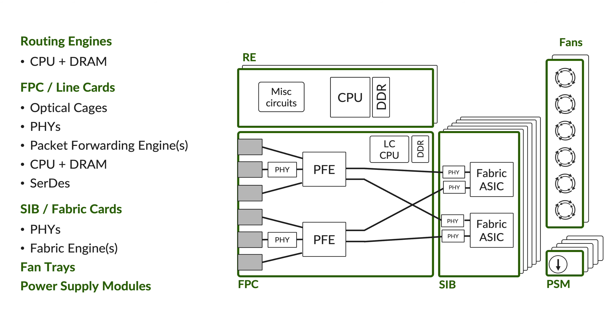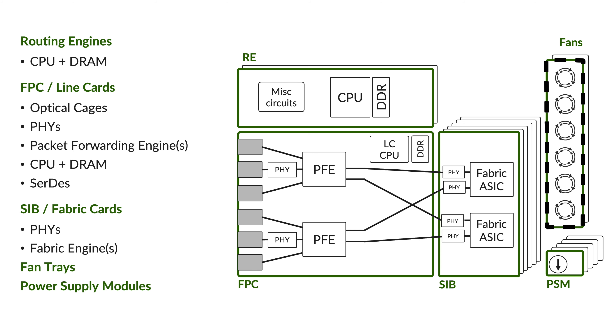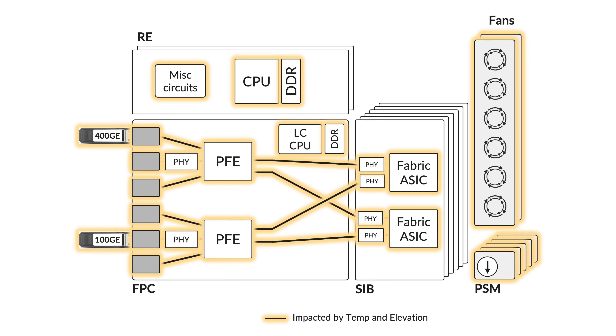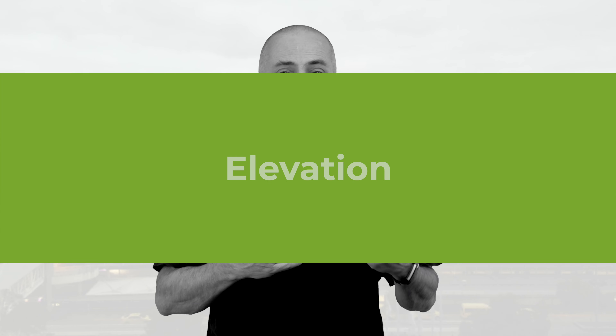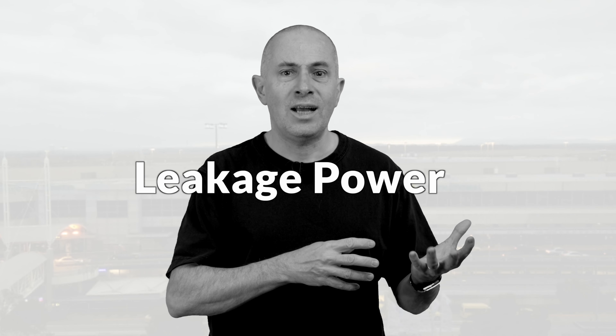Let's keep this modular chassis example to illustrate our explanation. It will be abstracted to routing engines, line cards, fabric cards, fan trays, and power modules. These field replaceable parts contain a lot of electronic components, and multiple parameters can influence their power usage. Two parameters are common to every electronic part in the device: temperature and elevation. We can break down the power used into two parts — the static part and the dynamic part. The static part is also referred to as leakage power: it's the current that flows through the transistor when there is no activity.